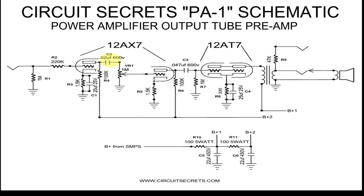C2 is the coupling capacitor. This blocks the DC plate supply from the first stage from reaching the grid of the second stage. This capacitor allows the audio signal to pass from the plate of stage 1 to the grid of stage 2. The higher the value of this capacitor, the more low frequencies will pass. Because I did not want to build a low frequency roll off tone control circuit into this preamp, I used a small 0.02 microfarad capacitor in this position. This small value cuts some of the lows and rumble but allows the highs to pass freely.